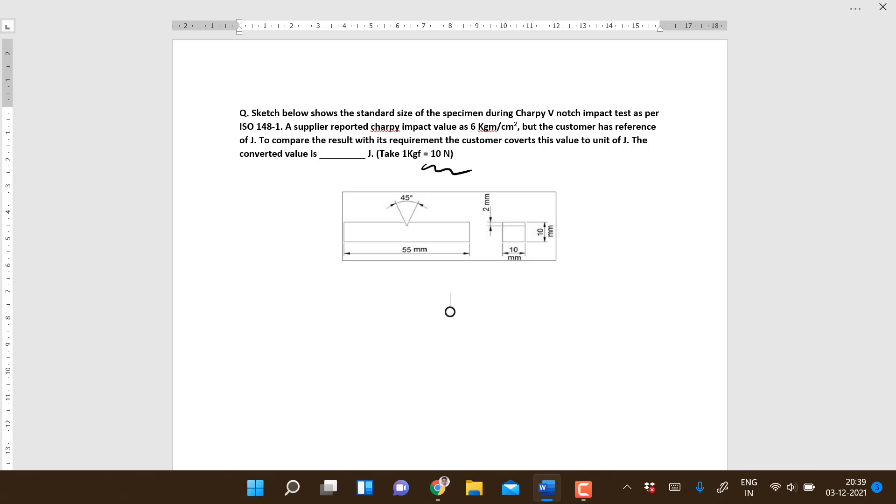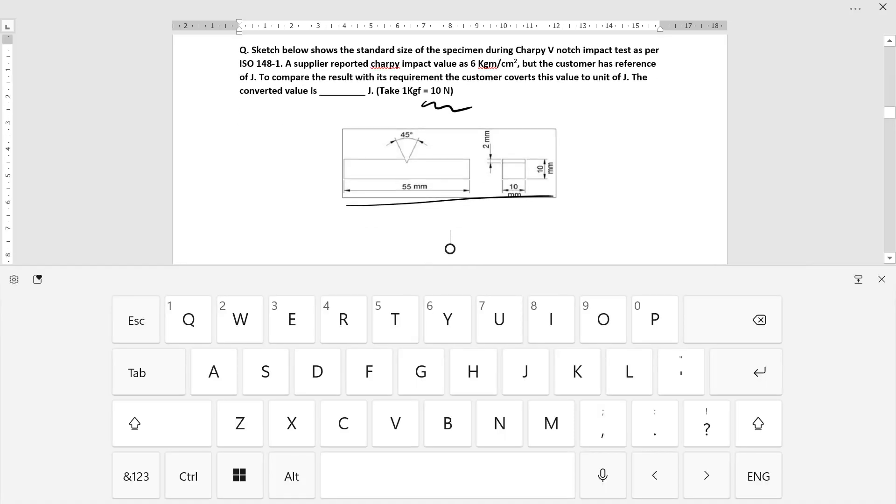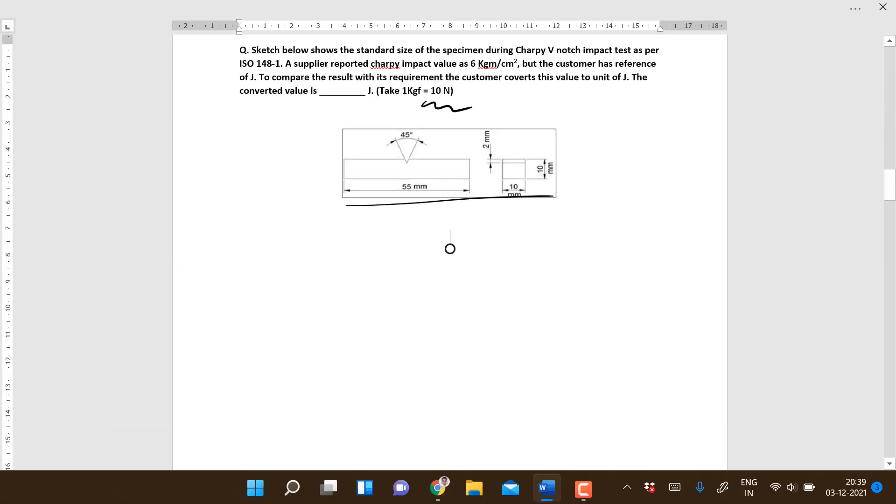So this is the sketch. For this, see this specimen and this portion is the V-notch, and the depth of this is 2 mm.